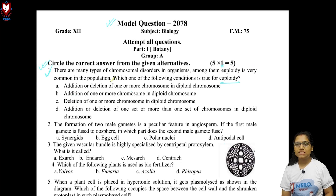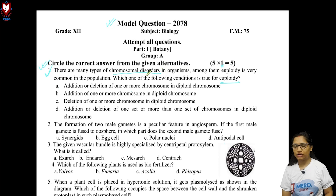This is from genetics, chapter 3, which is the topic of mutation and polyploidy. In the chromosomal disorder category, there is a numerical-type disorder being discussed. There is aneuploidy and euploidy.